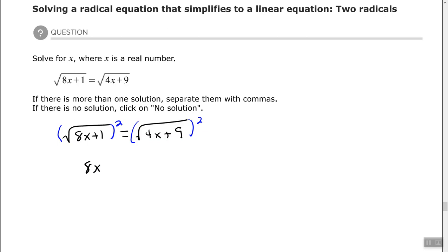So we have 8x plus 1 equals 4x plus 9. Let's solve this equation: 8x minus 4x is 4x, and 9 minus 1 is 8, giving us 4x equals 8. Divide both sides by 4, and x equals 2.